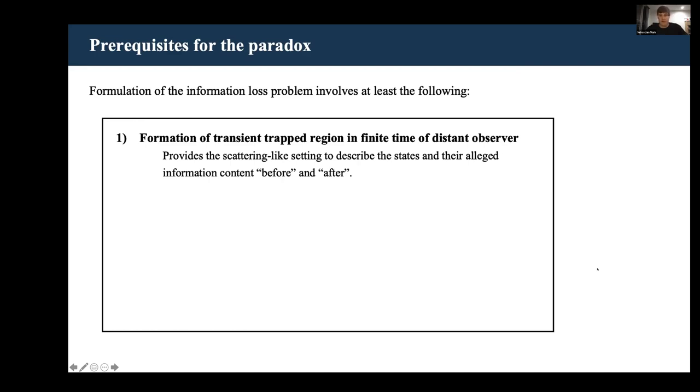This region can either disappear completely or turn into a stable remnant, but in either case, this should take place in finite time as measured by a distant observer. This is necessary because it provides a scattering-like setting that we need to describe the quantum states and their alleged information content.